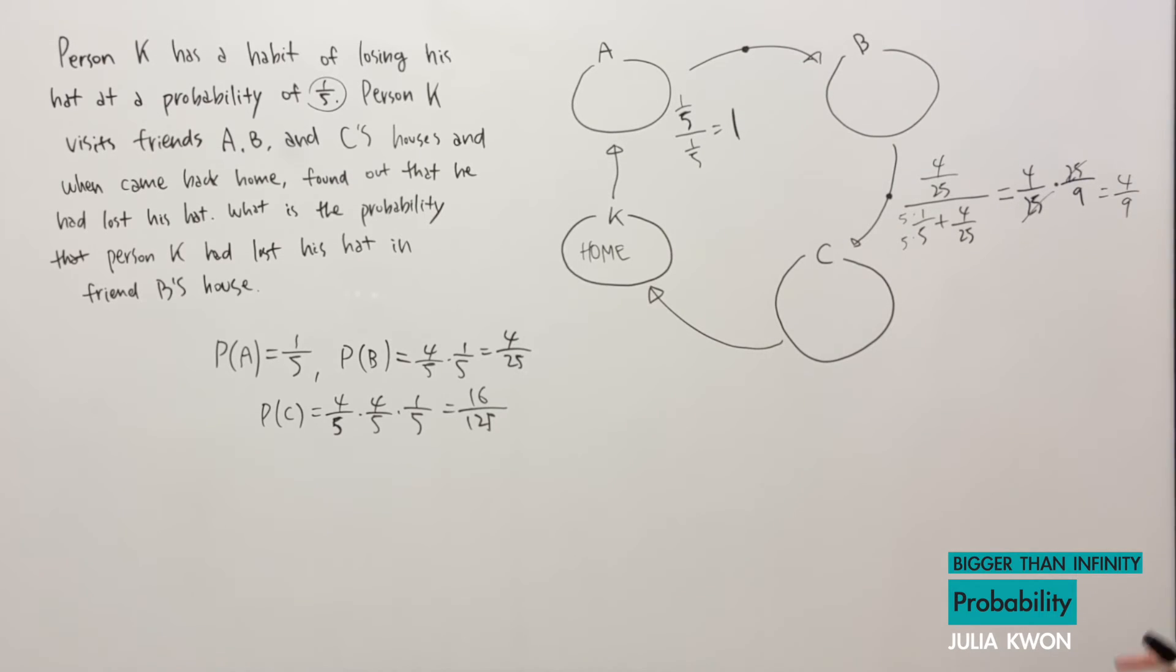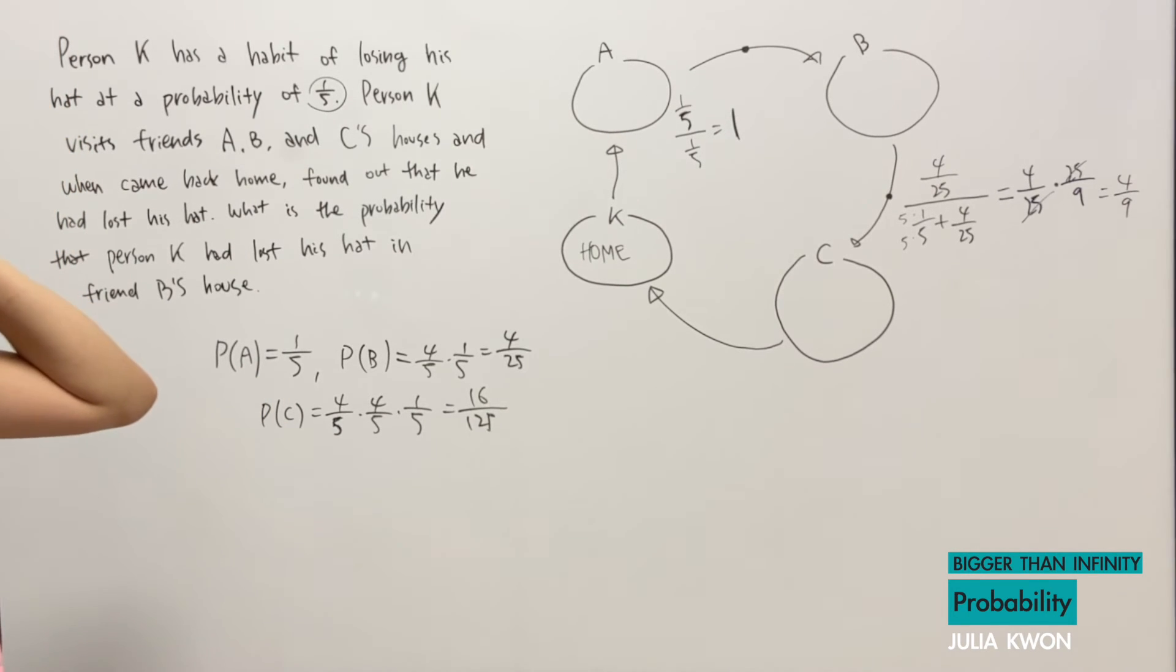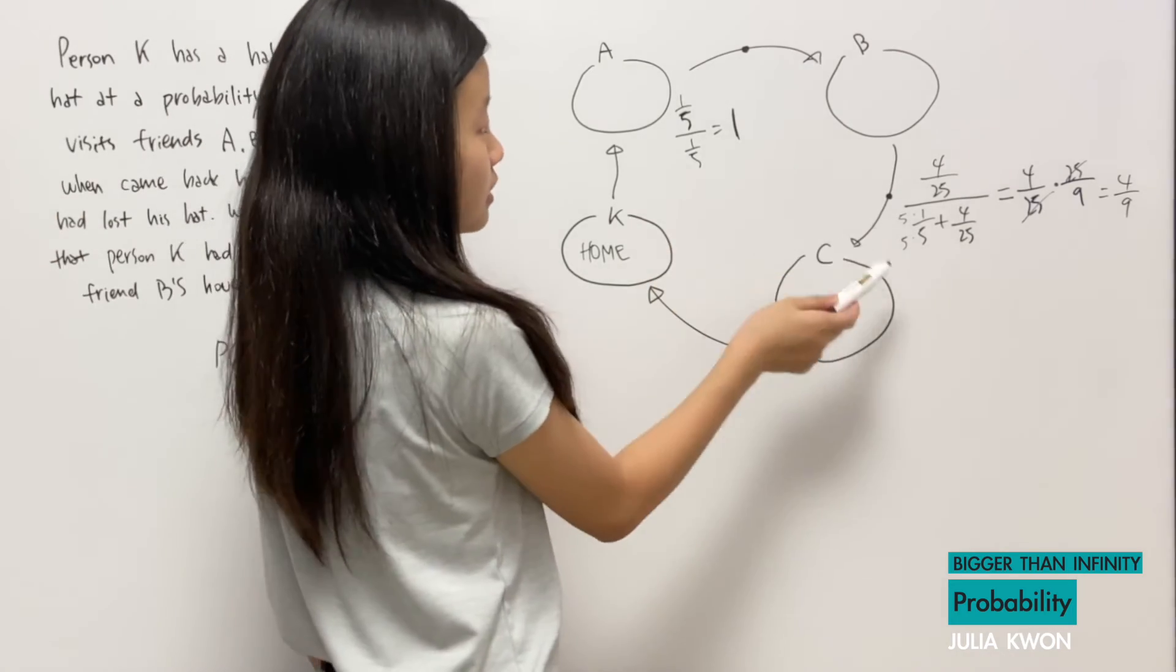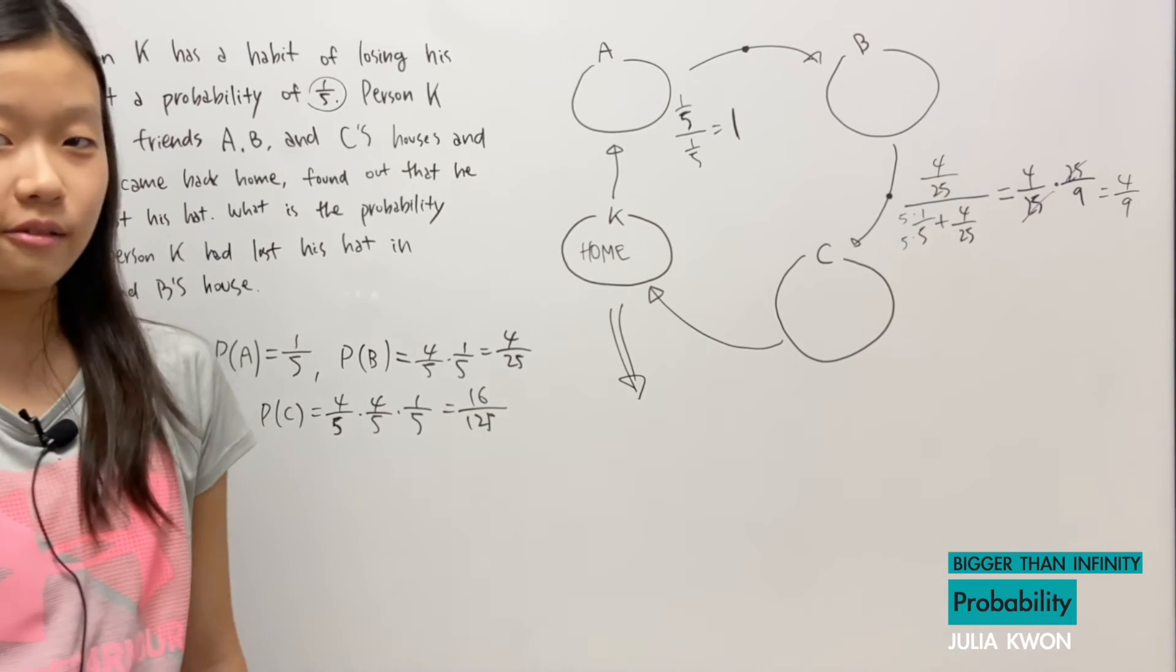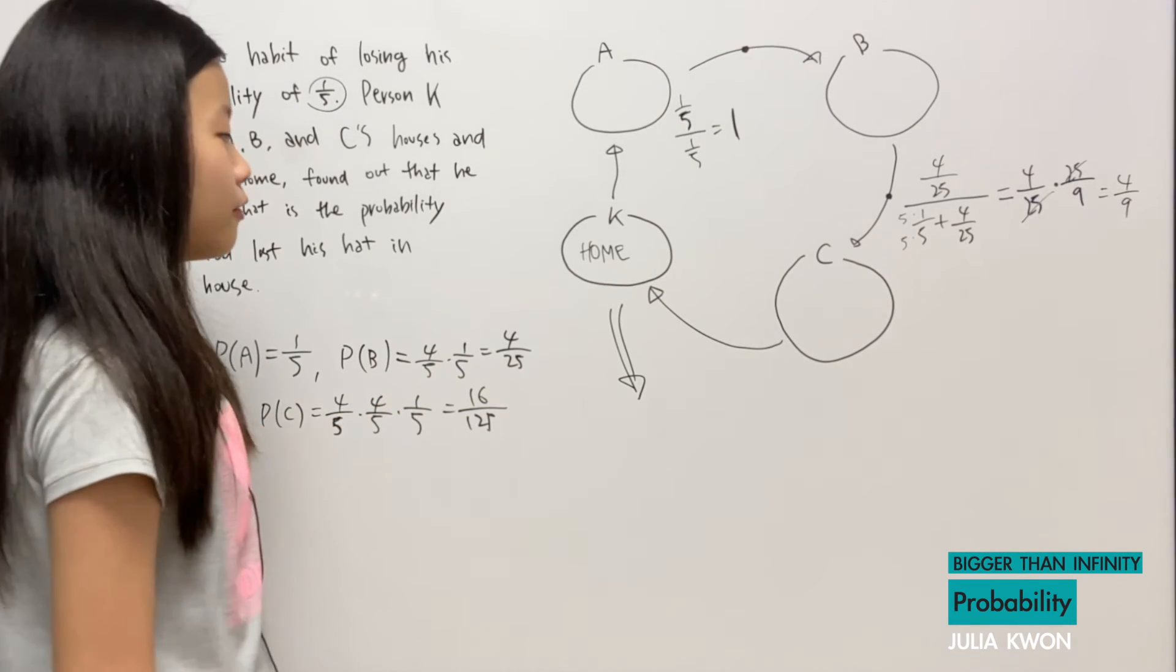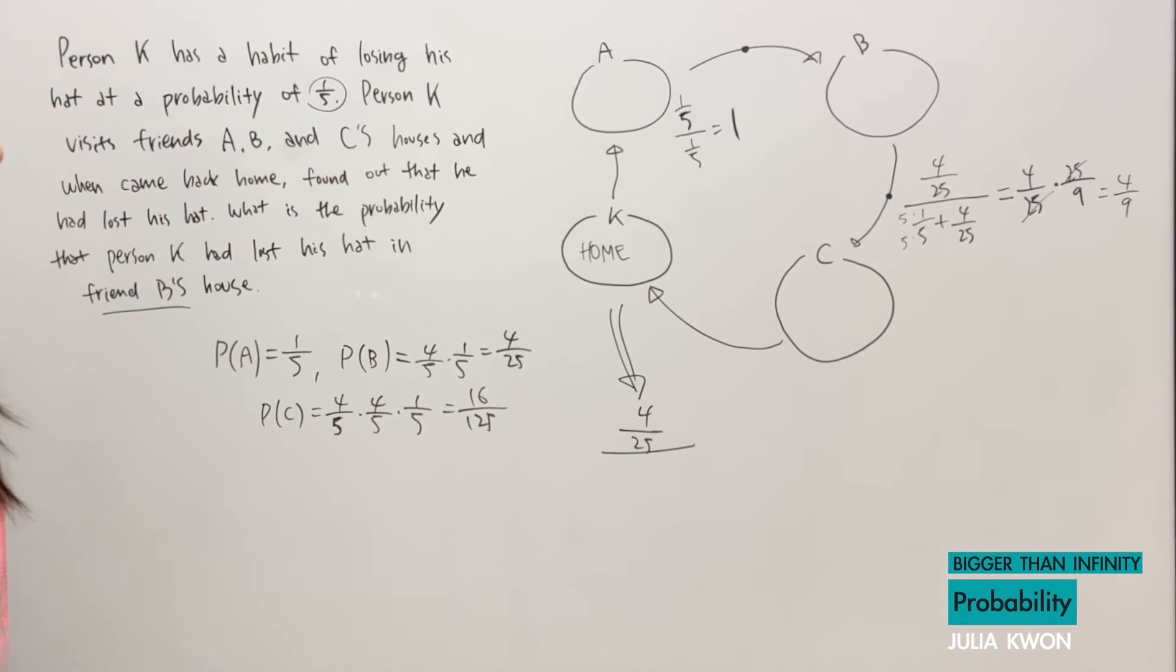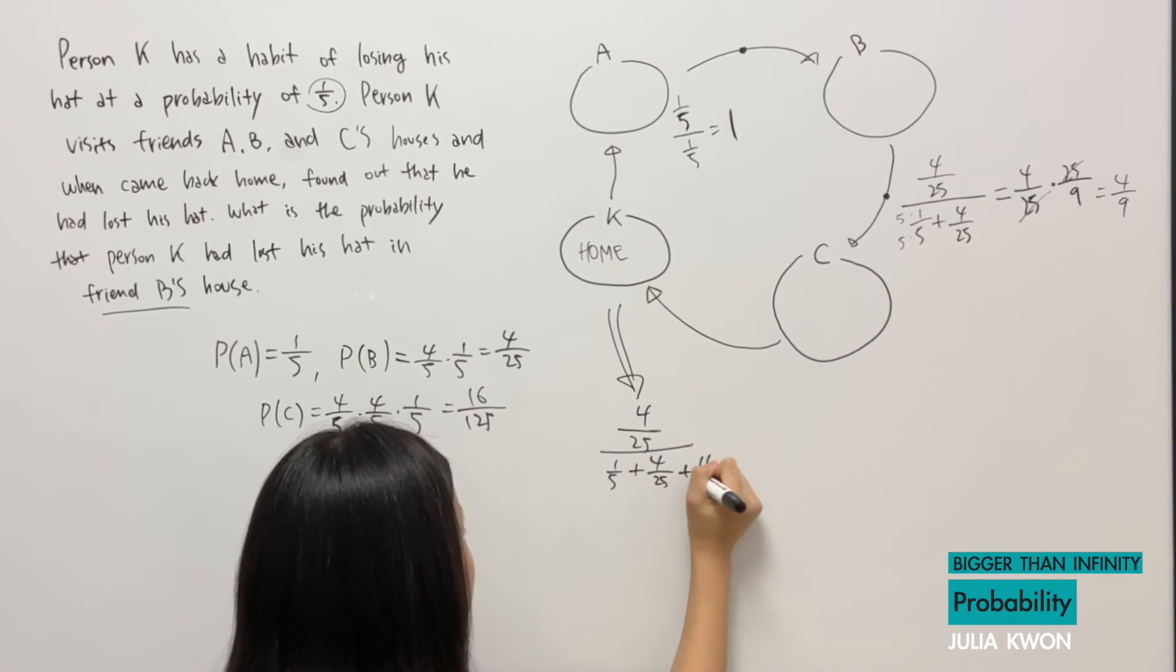But now, the actual question is, what is the probability that he lost his hat in house B after he came back home and realized that he forgot his hat in one of the houses? So just like we did it for this and this, we're going to solve for the answer basically the same way. So, the probability that he will lose his hat in house B is 4/25, divided by the probability that he will lose his hat, which is all of these three added up together. So, that is 1/5 plus 4/25 plus 16/125.